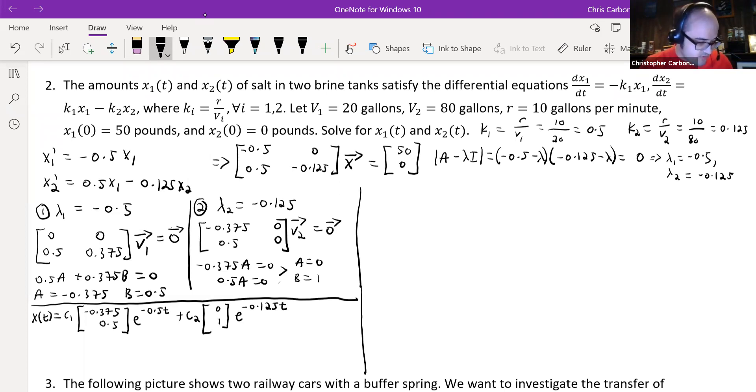And that will give us our two equations. x₁(t), in this case, is just going to be negative 0.375 times c₁ times e to the negative 0.5 times t, and x₂(t) is going to be 0.5 times c₁ times e to the negative 0.125 times t.